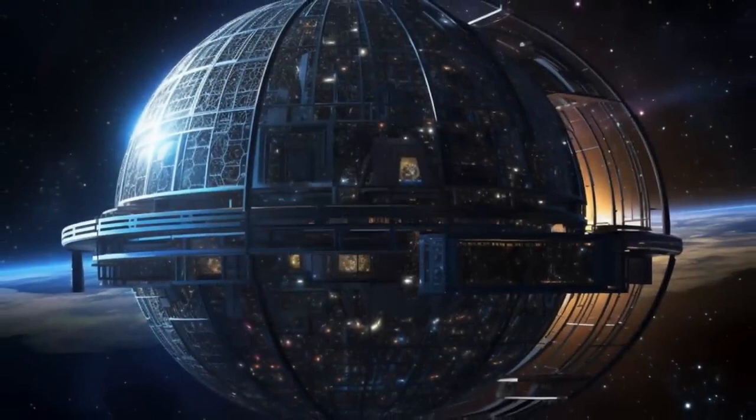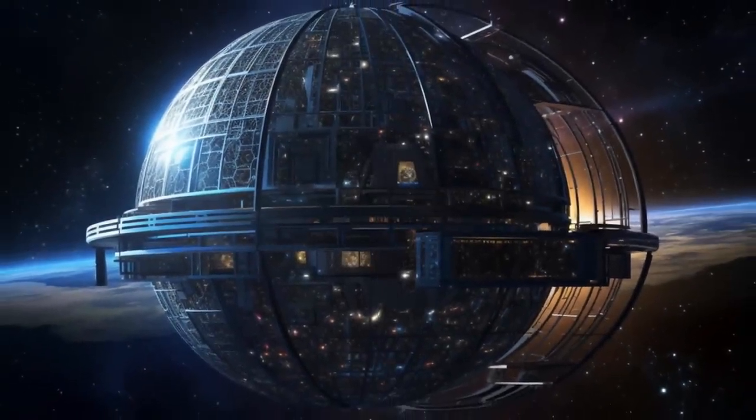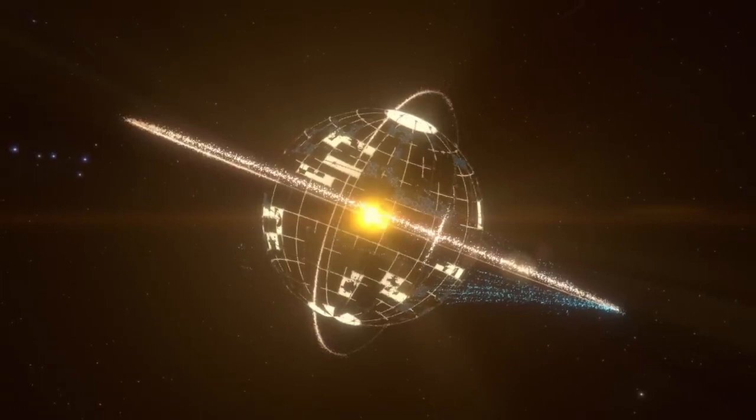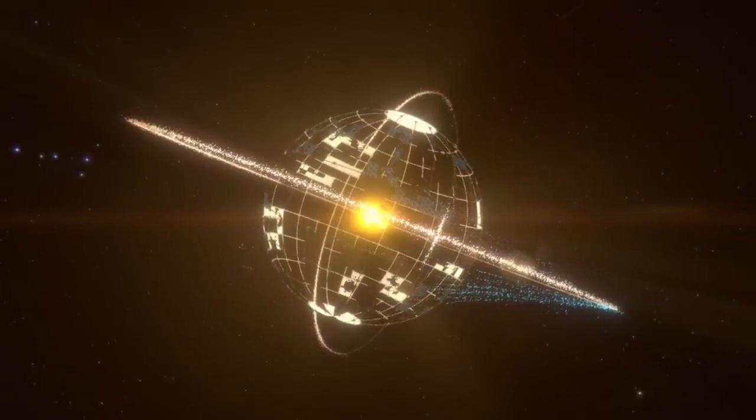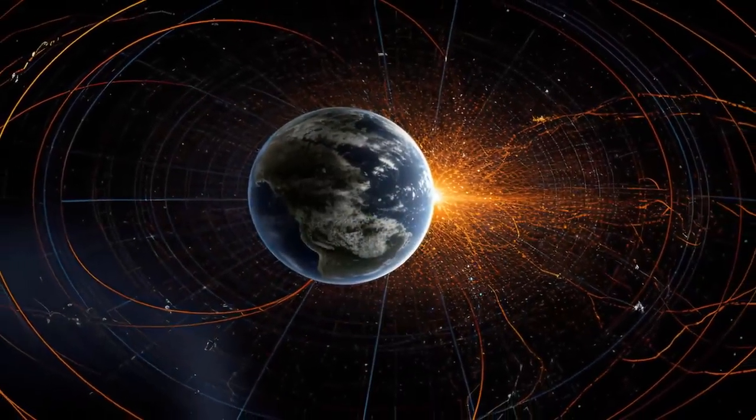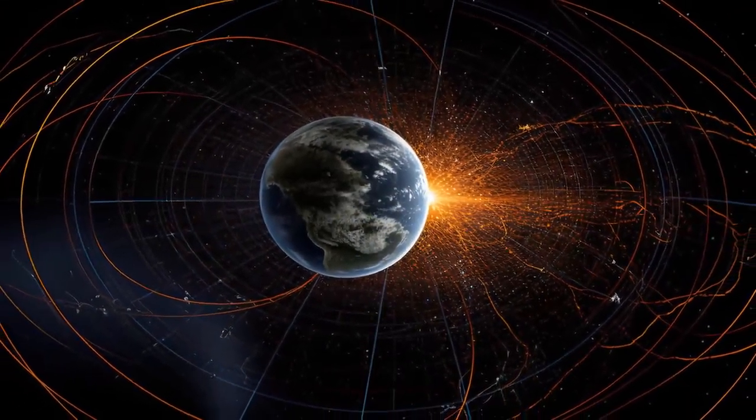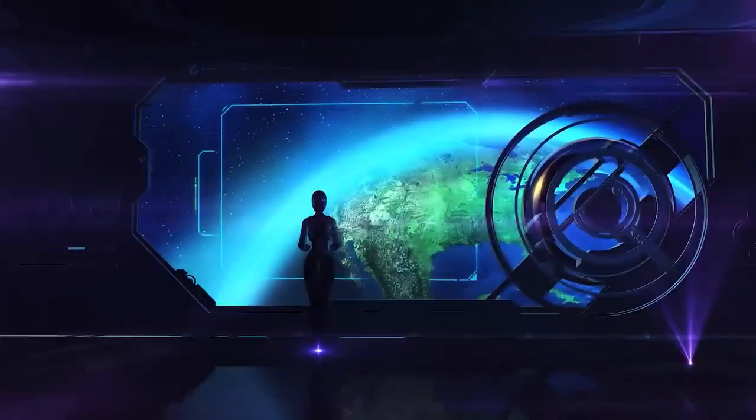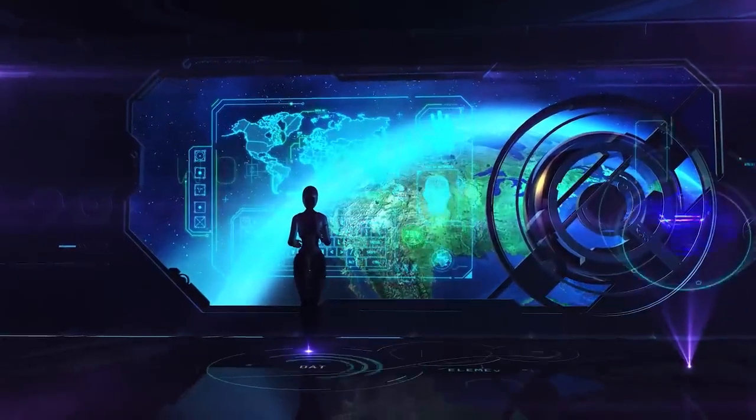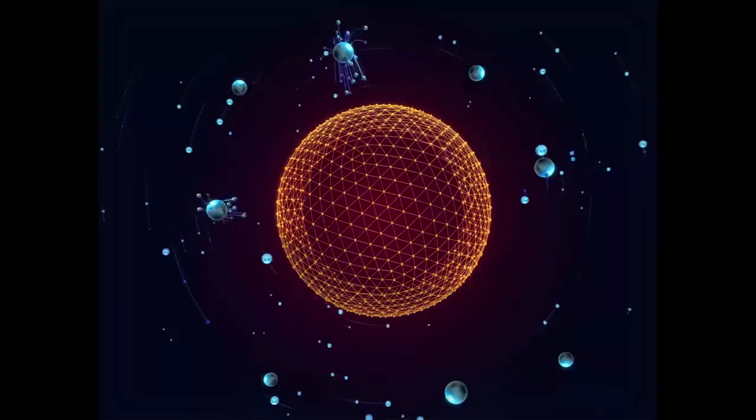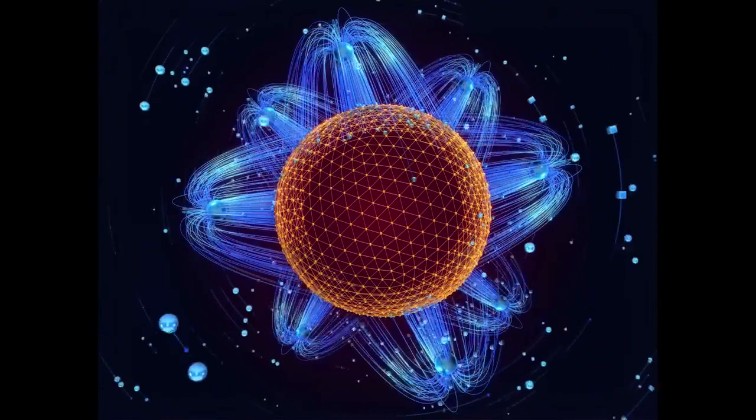The swarm would consist of a large number of individual solar collectors or panels, which could be positioned at different distances and orientations around the star to maximize energy capture. The energy collected by the swarm could then be transmitted wirelessly to a central location for storage or use by the civilization. As humanity ushers in the age of anti-gravity engines, it will unlock new opportunities for extended space travel and the colonization of the solar system.